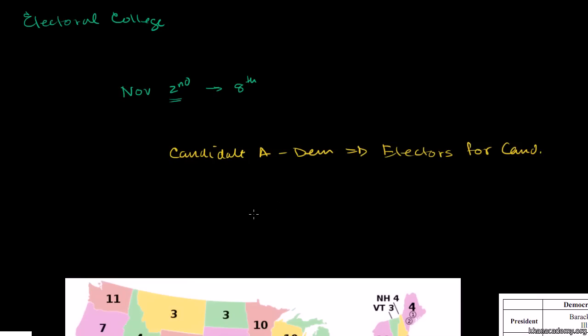In most states, it isn't proportional based on what proportion of people vote for one candidate or another. In most states — except for Maine and Nebraska — it is a winner-take-all system.